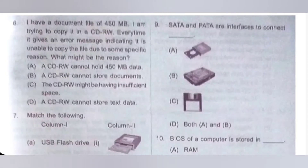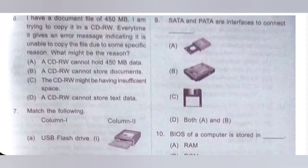Ninth question. SATA and PATA are interfaces to connect: A) CD drive; B) hard disk drive; C) floppy drive; D) both A and B. SATA means serial advanced technology attachment and PATA means parallel advanced technology attachment — these are both types of hard drive connections. These are interfaces to connect both A and B. Option D is the correct answer.